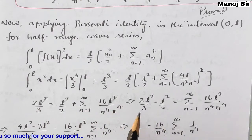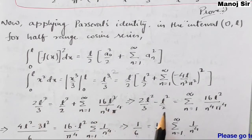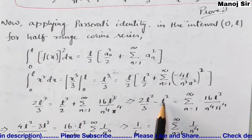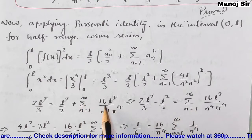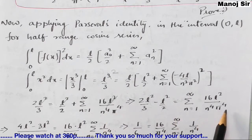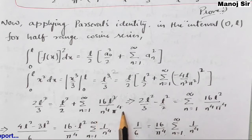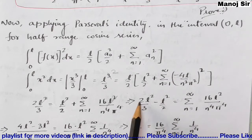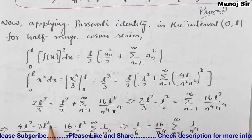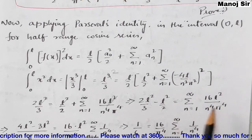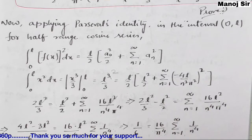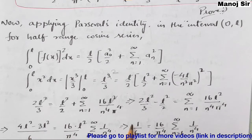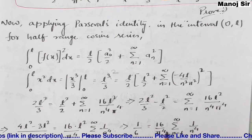Simplifying: l³/3 = l³/4 + (l/2) · 16l²/π⁴ · Σ(1/n⁴). Since l² is common to all terms, it cancels. Moving l³/4 to the left: l³/3 − l³/4 = (8l³/π⁴) Σ(1/n⁴). Taking LCM on the left gives l³(4−3)/12 = l³/12. So l³/12 = (8l³/π⁴) · Σ(1/n⁴). Dividing both sides by l³: 1/12 = 8/π⁴ · Σ(1/n⁴).